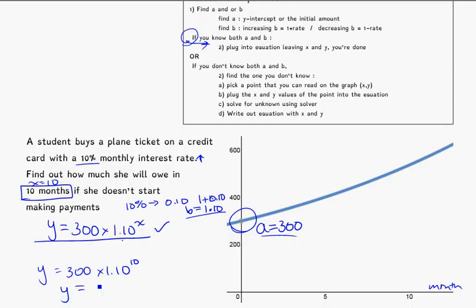Put that in the calculator: $778 roughly. So in 10 months, if she takes out a $300 credit card bill with monthly interest of 10%, she's going to owe $778. Make sure you're paying your credit cards off quickly if you have them.